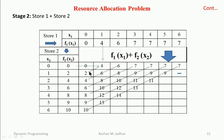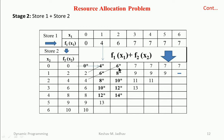For a particular number of boxes we can find the maximum profit — the highlighted values show this. For zero boxes, profit is zero. For one box, maximum profit is 4. For two boxes, maximum profit is 6, possible in two different combinations. For three boxes, maximum profit is 8 in two ways. For four boxes, maximum profit is 10 in two ways. For five boxes, maximum profit is 12 in two ways.